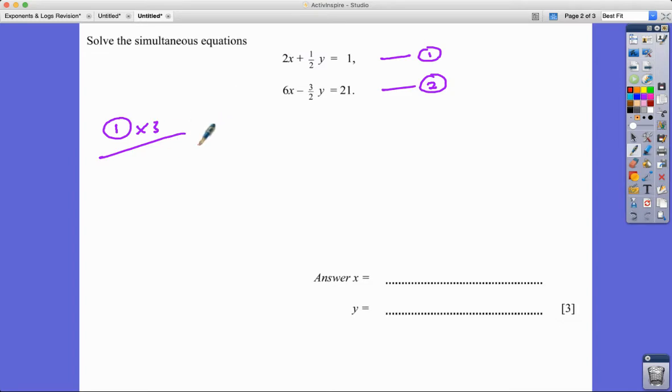So I'm going to times everything in that first equation by three. So 2X times by three is 6X. I'm also going to get 3 over 2Y, so three halves, three halves Y equals one times three, which is three. And I'm going to put that alongside. So that's now equation three that I've got.